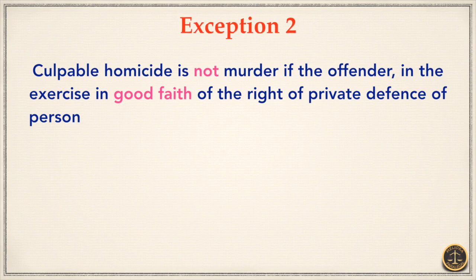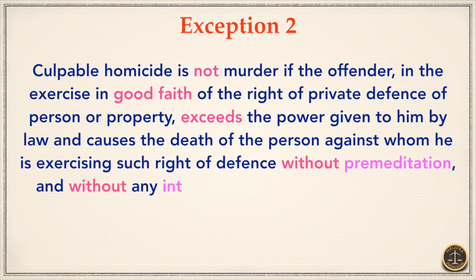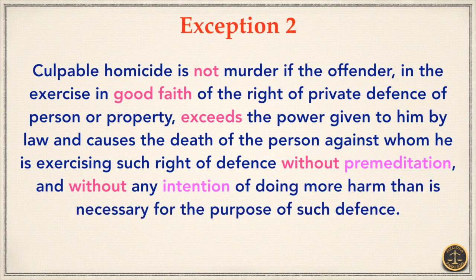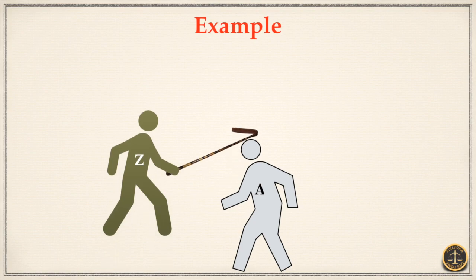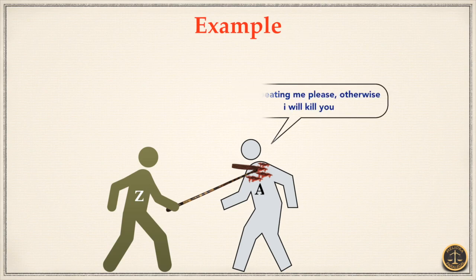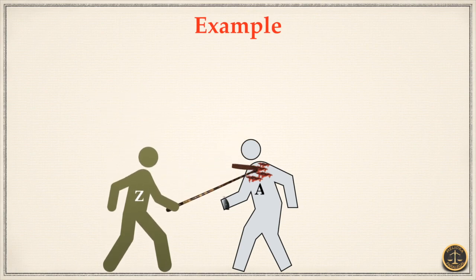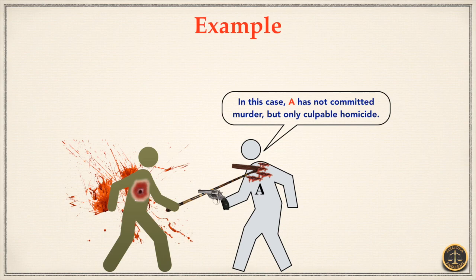Exception 2. Culpable homicide is not murder if the offender, in the exercise in good faith of the right of private defense of person or property, exceeds the power given to him by law and causes the death of the person against whom he is exercising such right of defense, without premeditation and without any intention of doing more harm than is necessary for the purpose of such defense. For example: Z attempts to horsewhip A, not in such a manner as to cause grievous hurt to A. A draws out a pistol. Z persists in the assault. A, believing in good faith that he can by no other means prevent himself from being horsewhipped, shoots Z dead. In such a case, A has not committed murder but only culpable homicide.